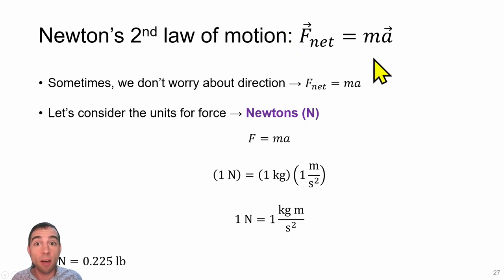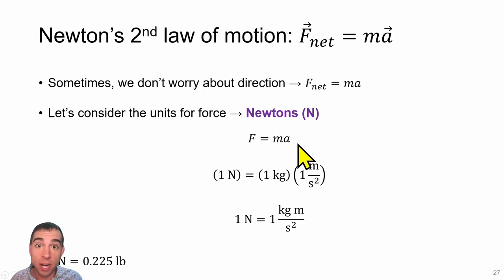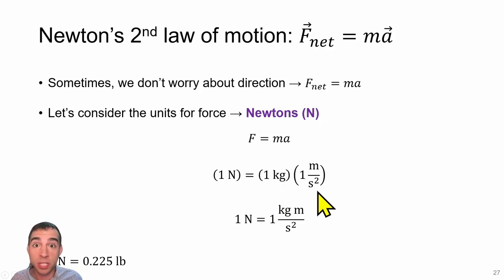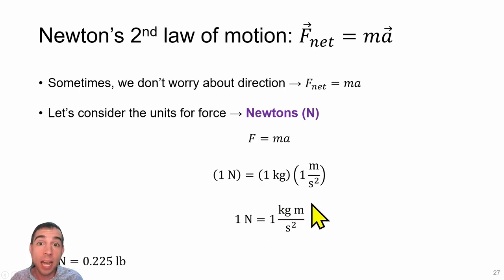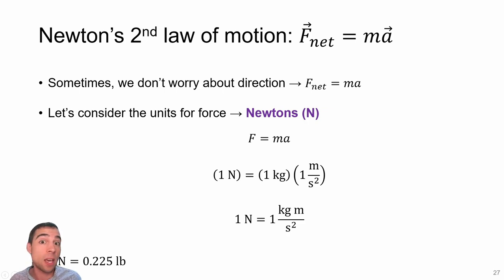If we look at Newton's second law — F equals ma — we can figure out what fundamental units are hidden inside one Newton. Force is measured in Newtons; since force equals mass times acceleration, mass is in kilograms and acceleration in meters per second squared, so one Newton equals one kilogram times meter per second squared. Comparing to English units, a Newton is about a quarter of a pound.